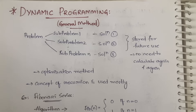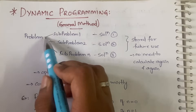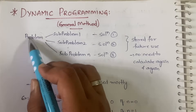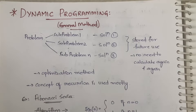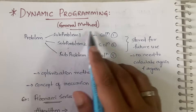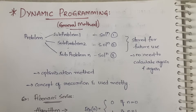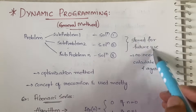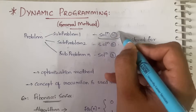In dynamic programming, what we do first is break the given problem into a number of sub-problems — the same thing we do in divide and conquer. But here we solve each and every sub-problem separately, and we are storing these solutions for future use.